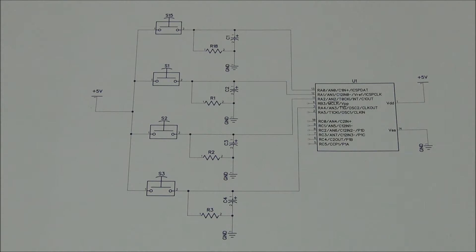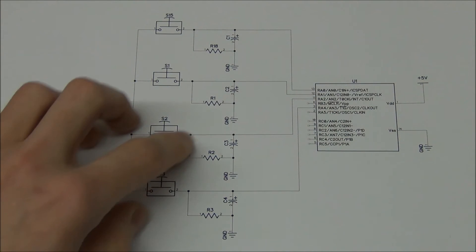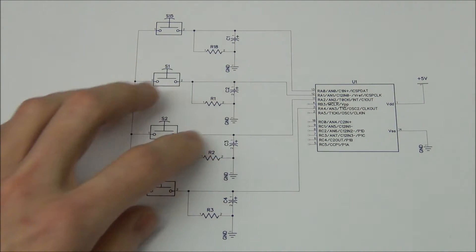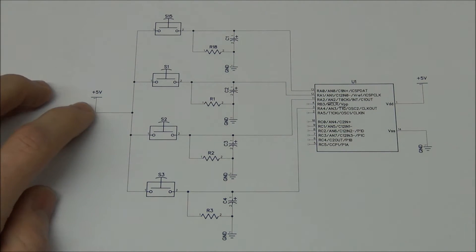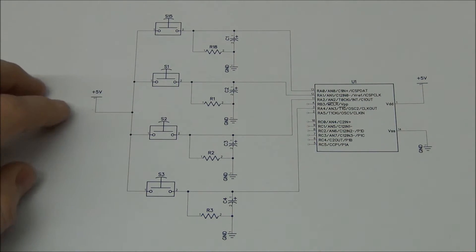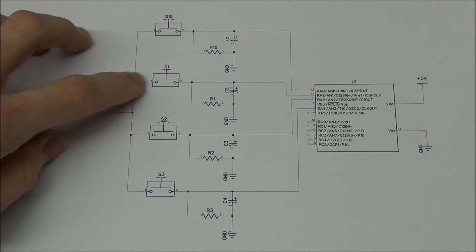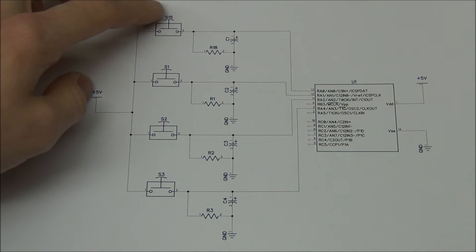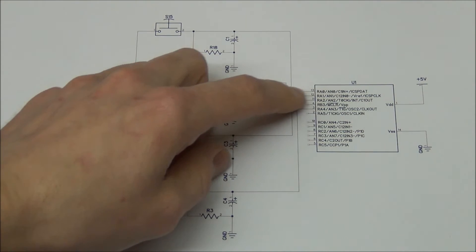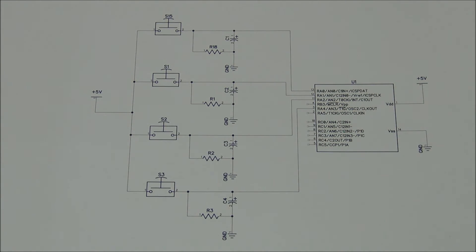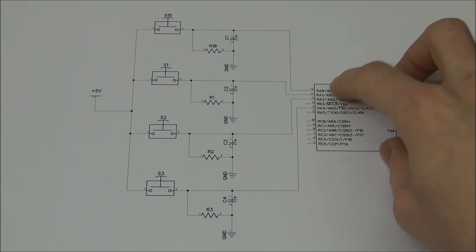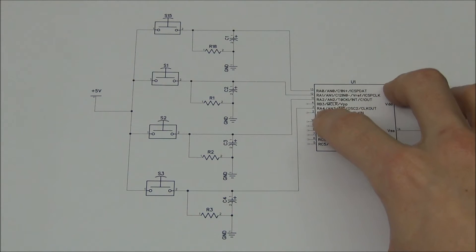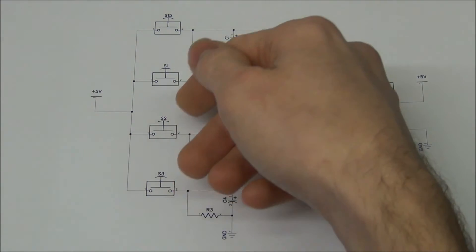So a typical way of doing that will be to use one input on the microcontroller for each switch you have. You will put 5 volts, for example in this case, into each switch. When you press the switch you will put 5 volts into the microcontroller. You can read the digital input state of the pin and you will know that the button has been pressed.